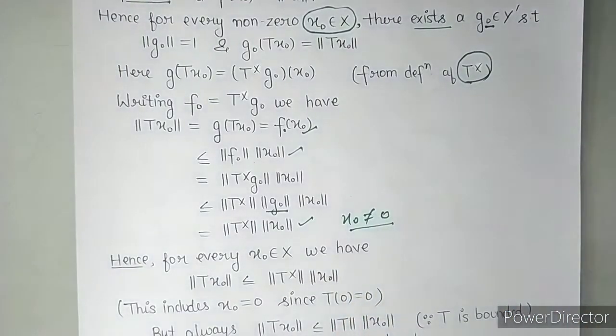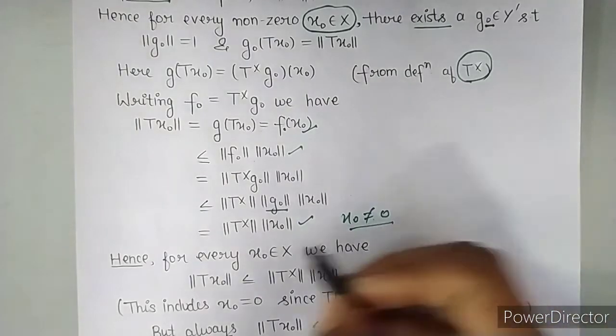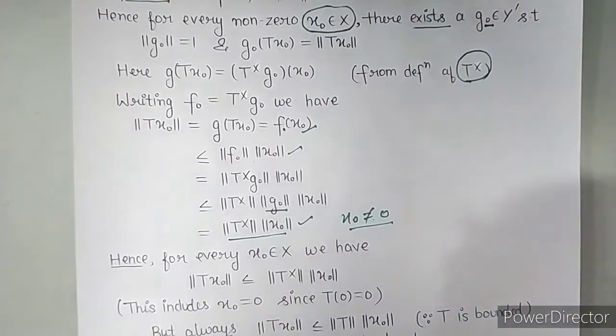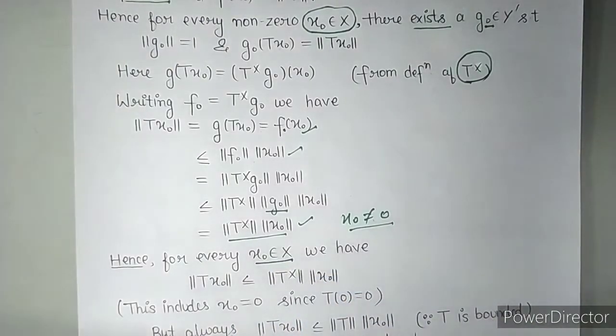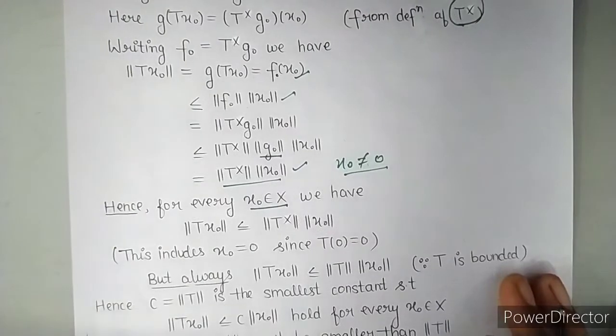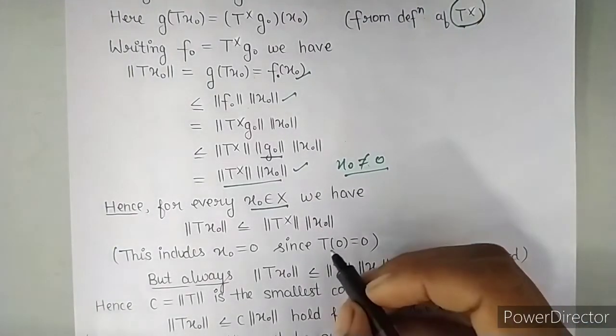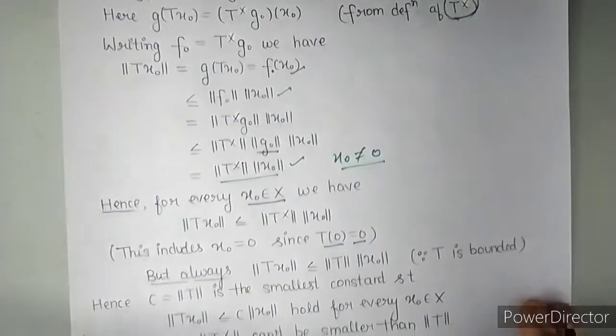That means now I have also included 0. How did I include 0? We can include 0 because T of 0 will be 0 only. For that also it will hold. OK?